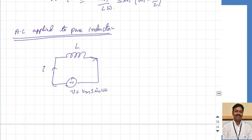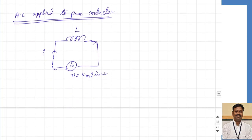Whenever current passes through an inductor, it produces some flux. That flux will link with its own inductance, which leads to the self-induced EMF as per Faraday's laws of electromagnetic induction. That self-induced EMF is given by minus L into di by dt. So the EMF induced E is the self-induced EMF in the coil.